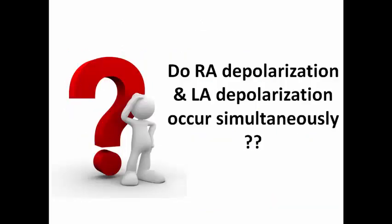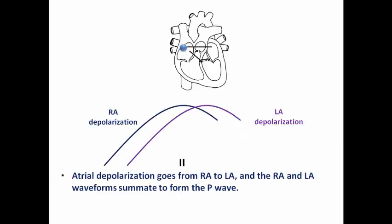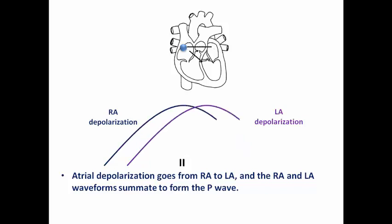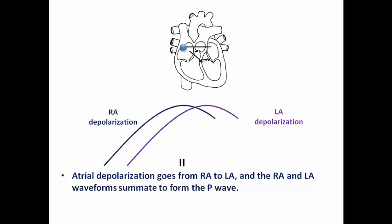An important question: do right atrial and left atrial depolarization occur simultaneously? Atrial depolarization goes from the right atrium to the left atrium, since the origin is the SA node. Together they form the P wave, but right atrial depolarization shortly precedes left atrial depolarization.